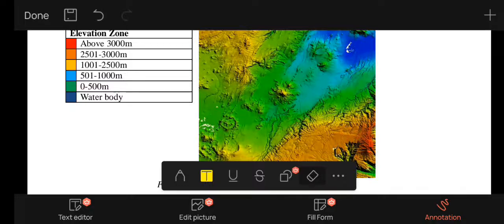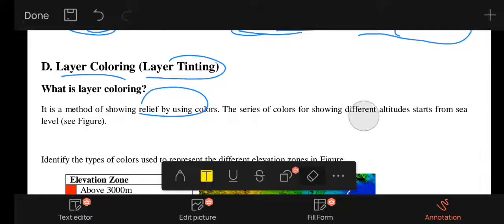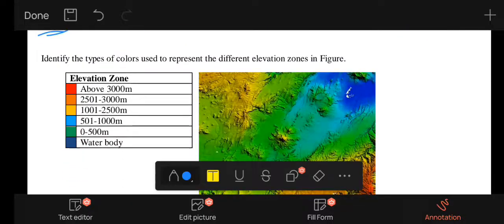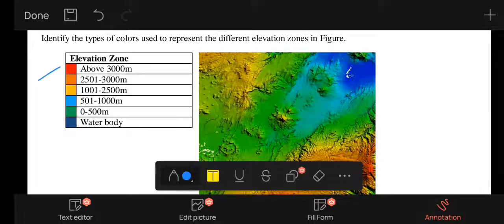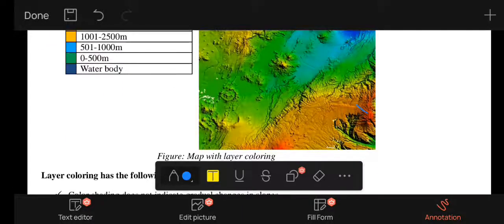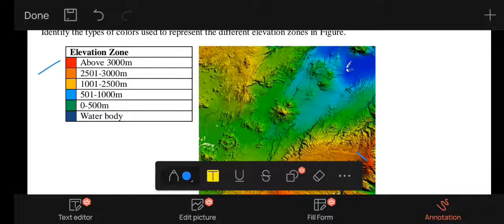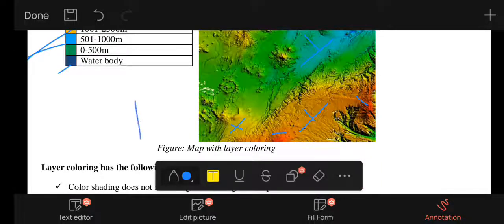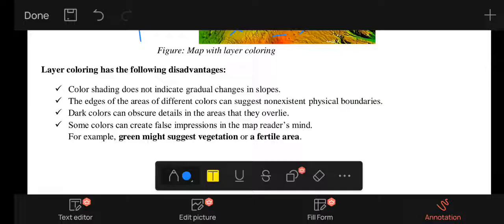Different colors are used to show different altitude zones. Yellow is used for low elevations, green for intermediate elevations, and brown for higher elevations. Different colors indicate different elevation ranges.